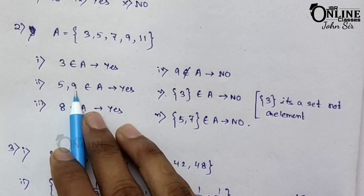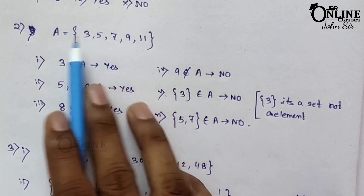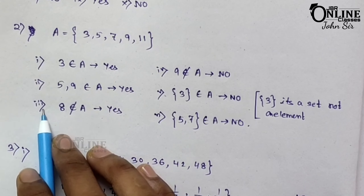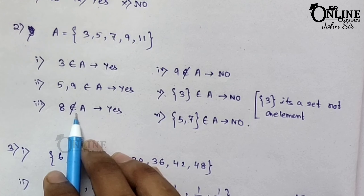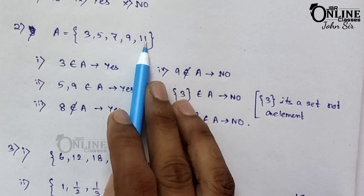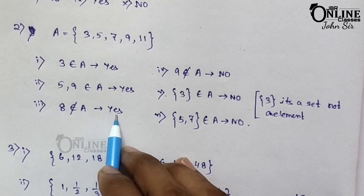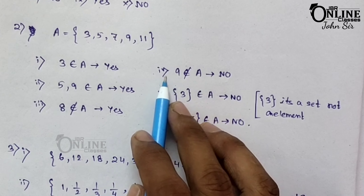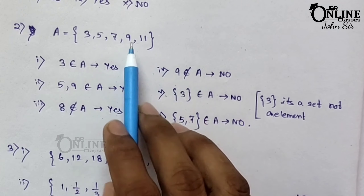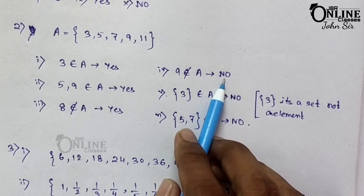Number 2: {5, 9} are elements of A. Yes, 5 and 9 are both elements of set A, so this is also true. Number 3: 8 is not an element of A. Since A has 3, 5, 7, 9, 11, and 8 is not there — this is also a true statement. Number 4: 9 is not an element of A. But 9 is an element of set A, so it's a false statement.